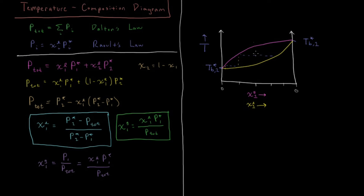Above the upper curve we are exclusively gas, and below both curves we are exclusively liquid. In between the curves there is an equilibrium between liquid and gas. Starting at a high mole fraction of component 1 in the liquid, any vapor which evaporates will be much less concentrated in component 1 — it will be much more enriched in component 2.